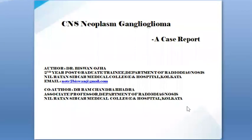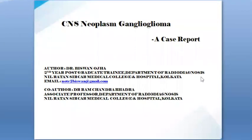CNS neoplasm — ganglioglioma. Introduction: Gangliogliomas are rare tumors of the central nervous system. They most frequently affect children and young adults with a slight male preponderance, and account for almost one percent of all CNS neoplasms. Gangliogliomas can occur anywhere in the CNS, but are most commonly found in the temporal lobe — up to 85 percent.